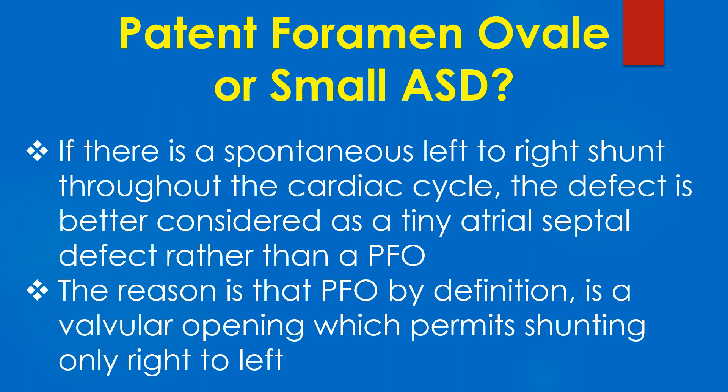If there is spontaneous left to right shunt throughout the cardiac cycle, the defect is better considered as a tiny atrial septal defect rather than a PFO. The reason is that a PFO by definition is a valvular opening which permits shunting only right to left.